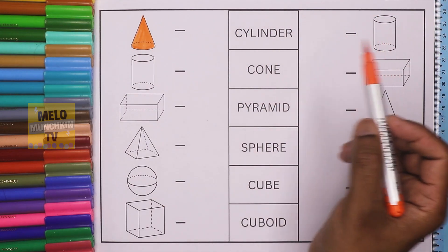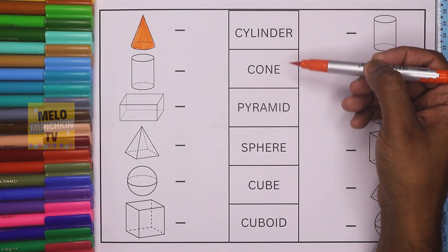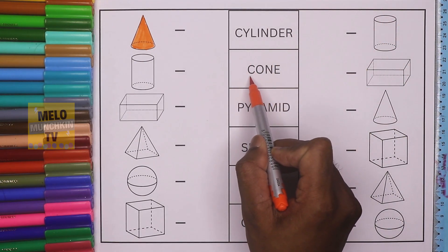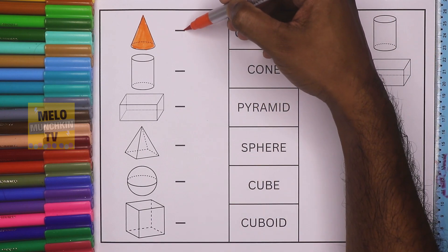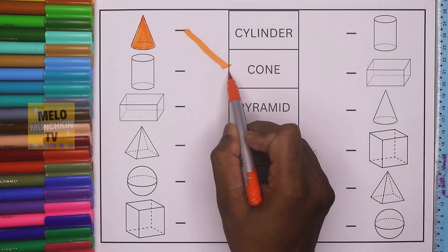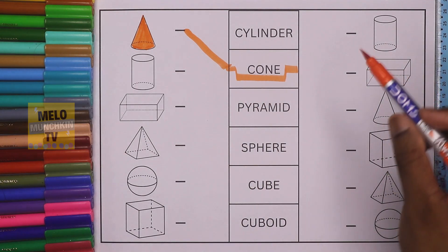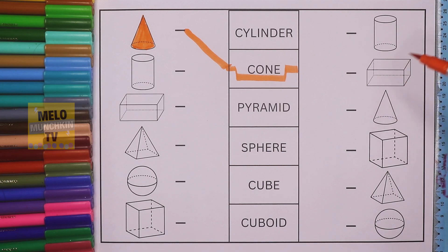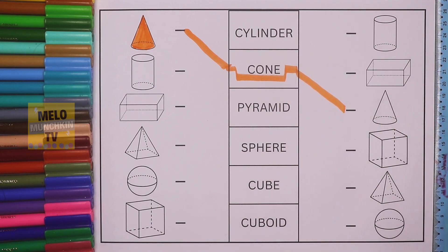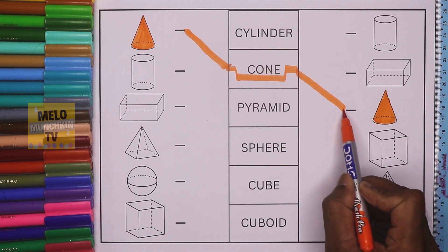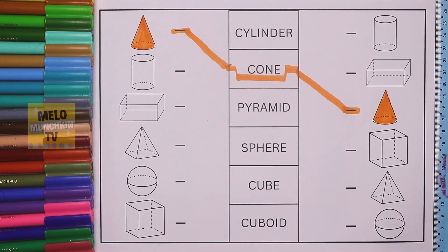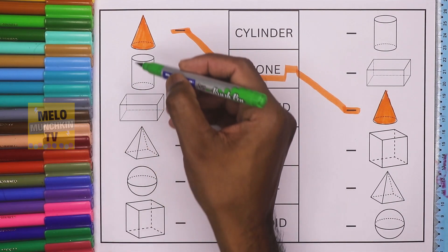First, I'll take orange color to color this shape. This is cone — C, O, N, E — cone. I'll join it like this and then find the cone shape from the right-hand side. So this is cylinder, this one is cuboid, and this one is cone. I'll join it like this and color it. So this is cone.